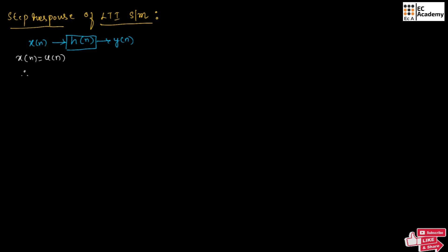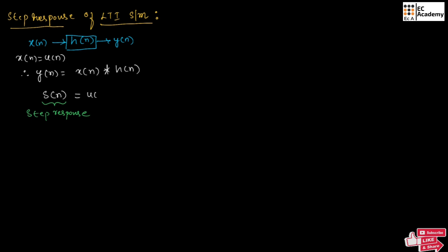We can write the response of the system Y of n is equal to X of n convoluted with H of n. Here, let us write S of n, which is the step response of the system. S of n is equal to U of n convoluted with H of n, which we can also write as H of n convoluted with U of n.